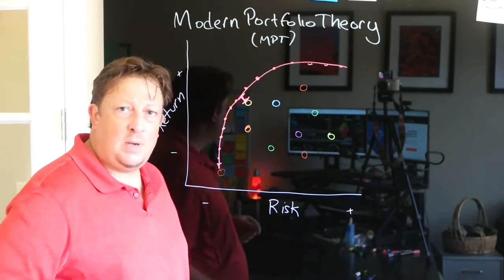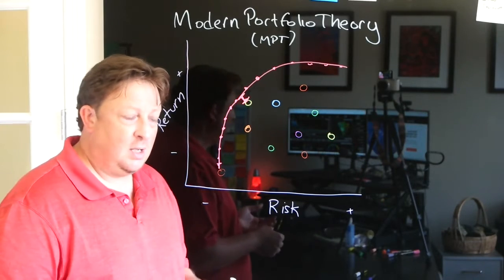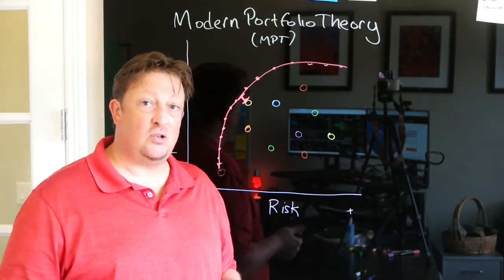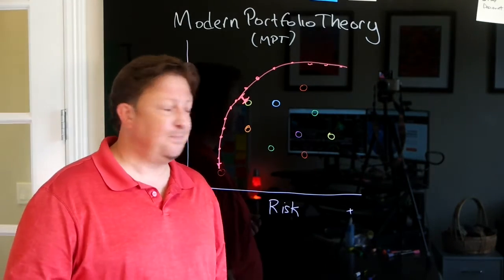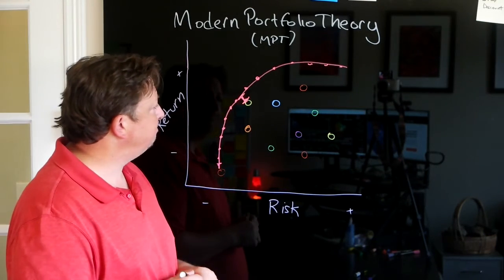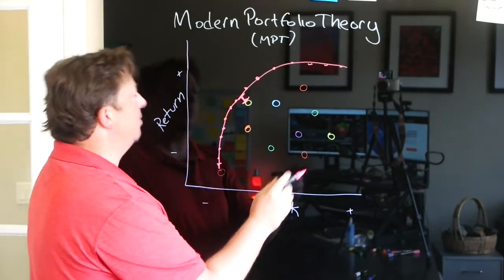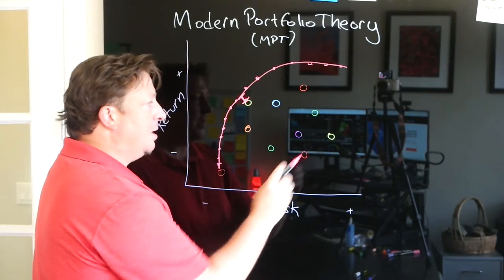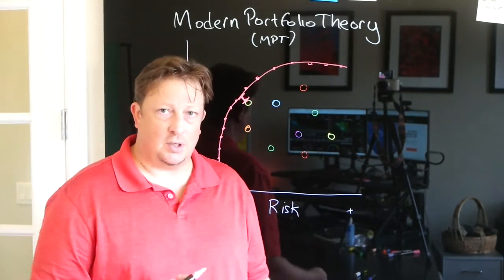So can we make a portfolio strategy that gives us a better risk-adjusted return than our single best investment? Yeah, we can. So the way this works is each of these different assets, obviously we're graphing them on the basis of their return and their risk.